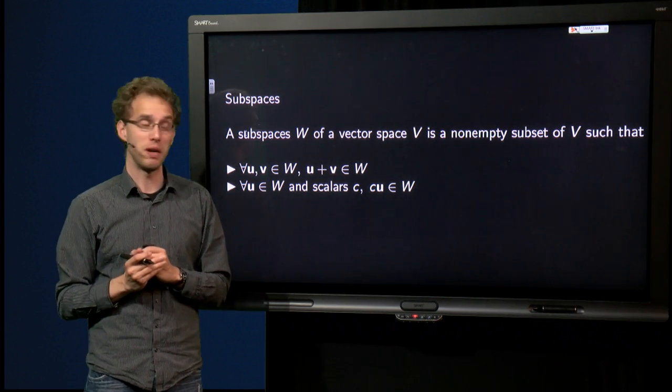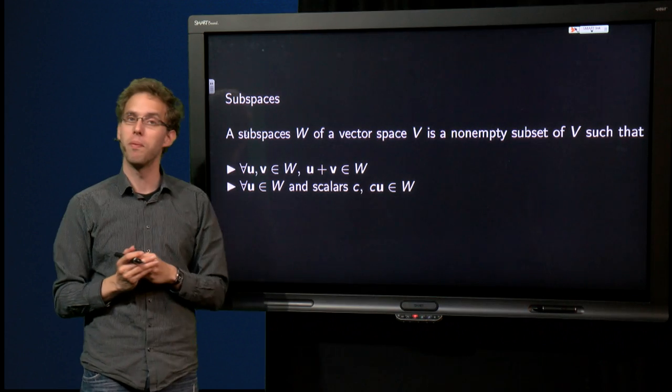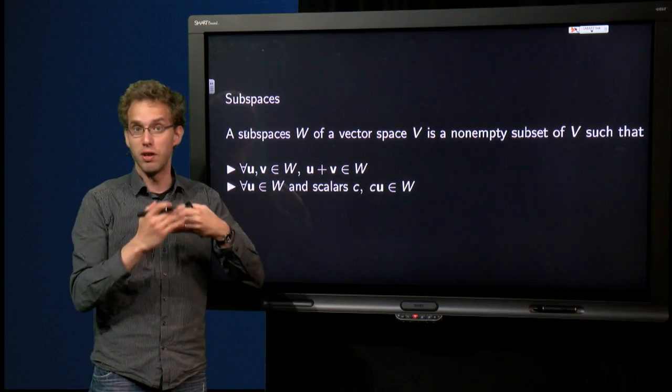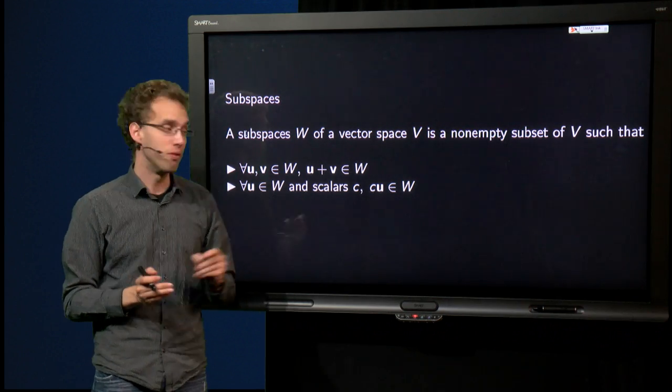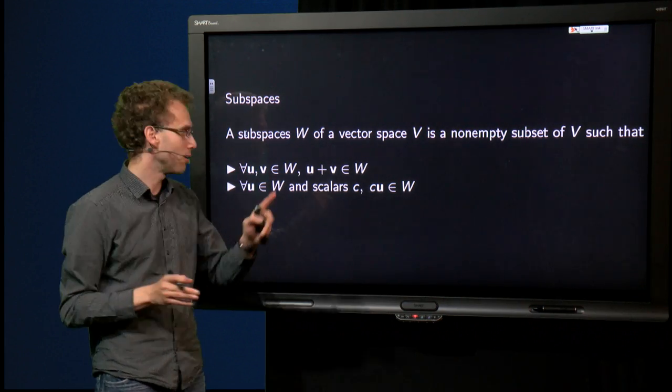So subspaces of a vector space V, let's call them W. Well, when do you have a subspace? When you have a non-empty subset, such that for all u and v in W, the sum is also in W.